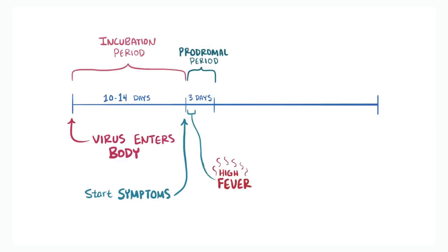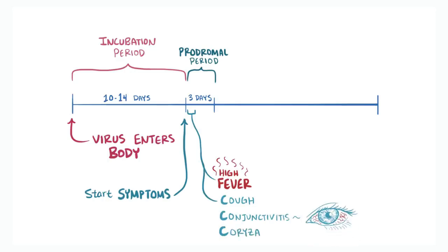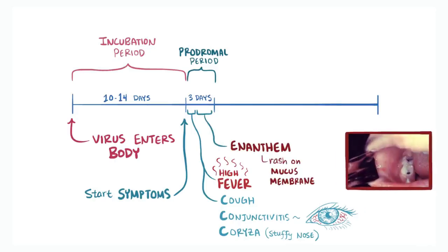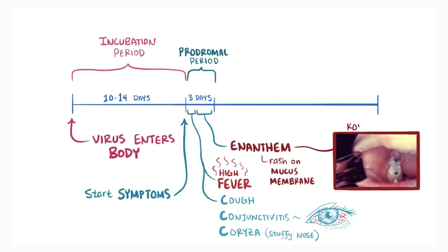The prodromal period starts with a high fever and the three C's: cough, conjunctivitis — inflammation and redness of the white part of the eye — and coryza, swelling in the mucous membrane of the nose, essentially a stuffy nose. One to two days later comes the enanthem, a rash in the mucous membranes that looks like salt grains on a wet background. These are called Koplik spots — small white spots commonly seen on the inside of the cheeks opposite the molars.